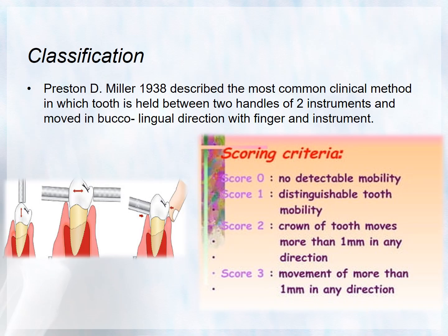For classification of tooth mobility, the most pronounced classification is by Miller in 1938. He described the most common clinical method in which the tooth is held between two handles of two instruments and moved in the buccolingual direction. It is scored as: Score 0 — no detectable mobility; Score 1 — distinguishable tooth mobility; Score 2 — crown of tooth moves more than one mm in any direction; Score 3 — movement of more than one mm in any direction, both horizontally or vertically.